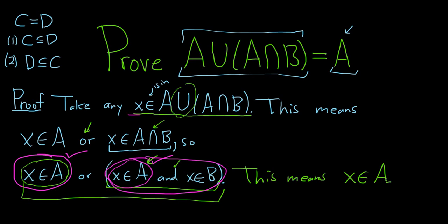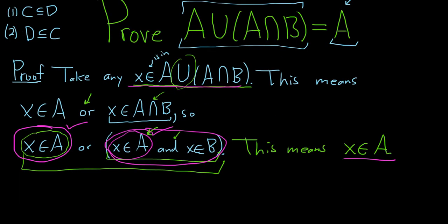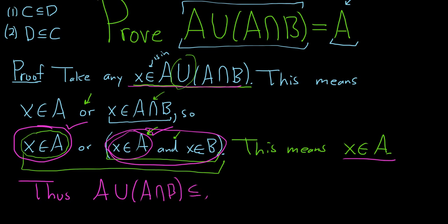So we took an element here and showed it was in the other set. That is precisely what it means for the first set to be a subset of the other. Thus, A union (A intersection B) is a subset of A.